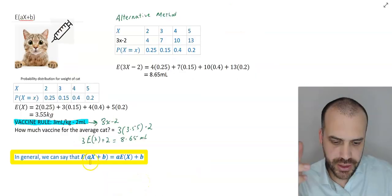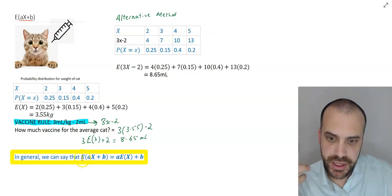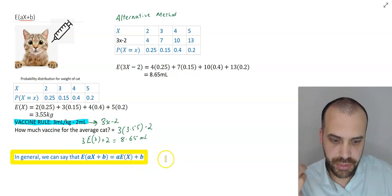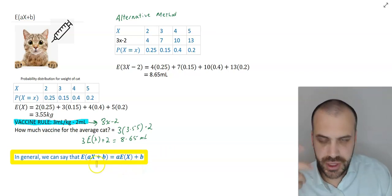Let's formalize that. So that's a very particular rule. The expected value of a, x plus b is equal to a times the expected value of x plus b. That's just one of the properties of expected value. There are some others, but that's the only one I'm going to cover in this video.